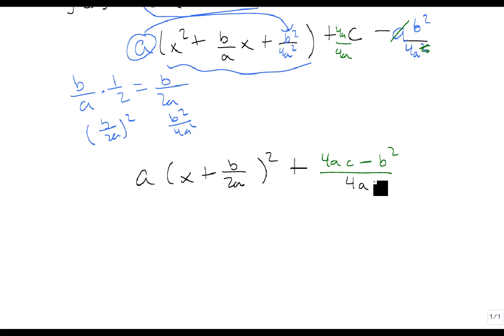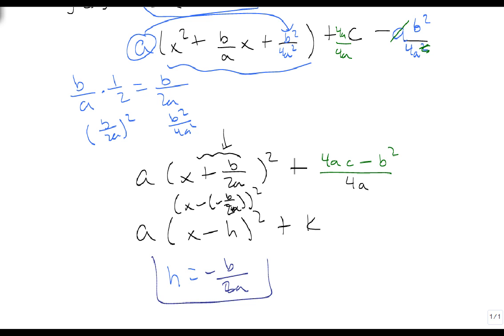And so now that we have this, we can look at this and notice that our h is hidden right here, because we're comparing this to a(x - h)² + k. And so we get as a formula that h equals—I can rewrite this again as x - (-b/2a)²—so h is this -b/2a. And this will always be true.